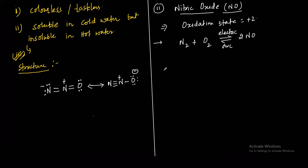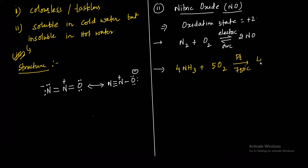Another method: nitric oxide is also prepared by the oxidation of ammonia with a platinum catalyst. The reaction is 4NH₃ + 5O₂ with a platinum catalyst, heated to around 750 degrees Celsius, giving NO plus H₂O. This method is called the Ostwald process.